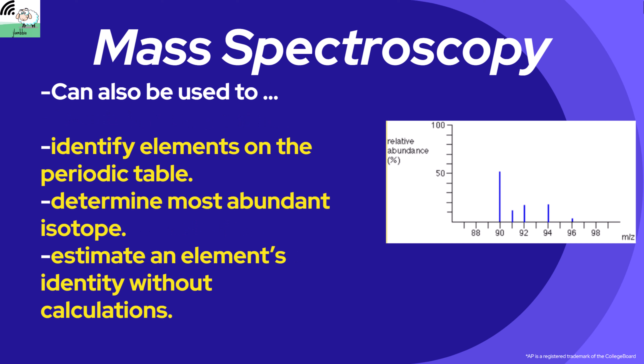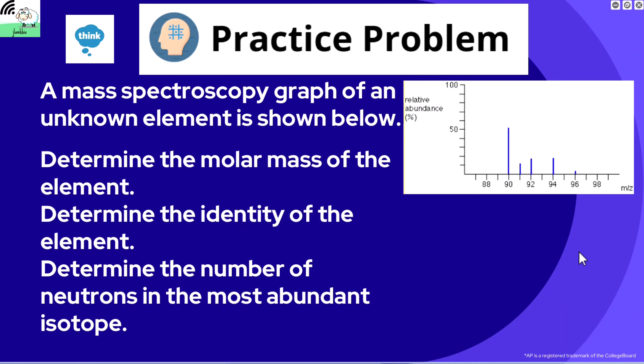Some things we can do with this information: we can identify elements on the periodic table, determine the most abundant isotope, and estimate an element's identity without calculations. Using rough estimates from the graph, we can figure out what the average atomic mass is without a calculator — that's a nice tool and time-saving trick. We can utilize the abundance and the mass together to calculate the average atomic mass and determine what element we're actually looking at.